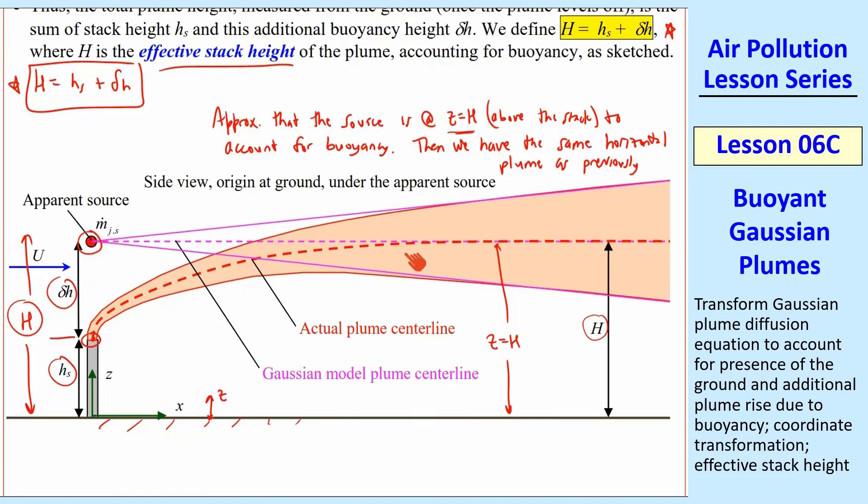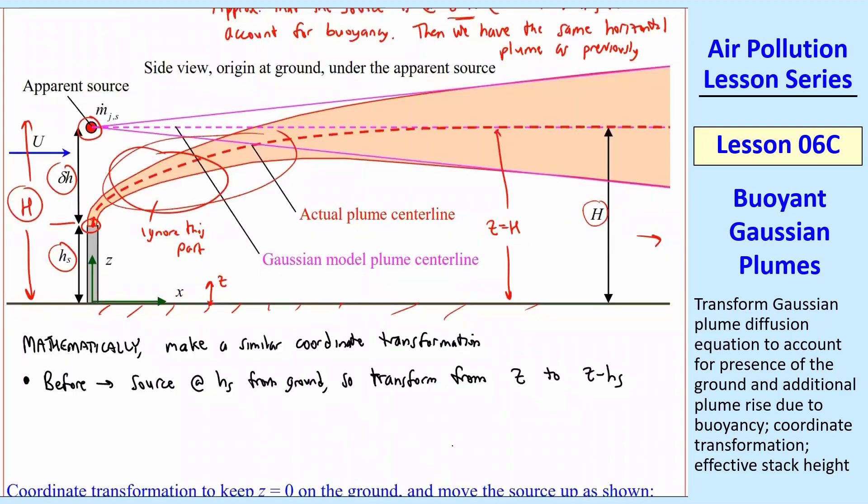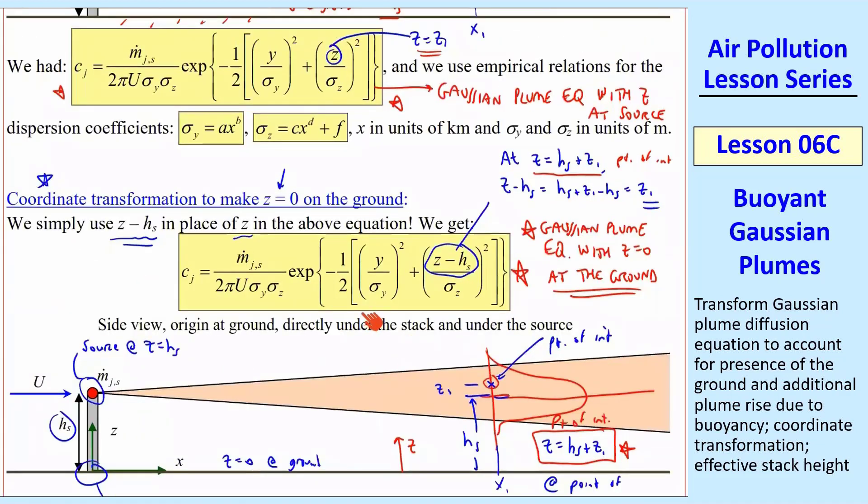This is the real plume, but we're going to kind of wait till it levels off and put our source up here. So we have the same equation as before. We'll just have to transform z again, and we ignore this part of the plume. Most of the time we're worried about way downstream where this plume starts interacting with the ground anyway. So that's not a big issue, and so this will make a very simple model. Mathematically, we're going to do the same transformation that we did before, just a coordinate transformation. All we did was, since we had the source at hs from the ground, we transformed from z to z minus hs. That's what we did up here to give us this equation.